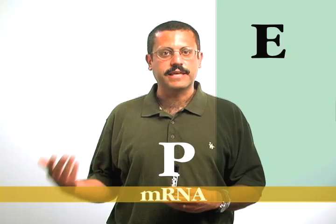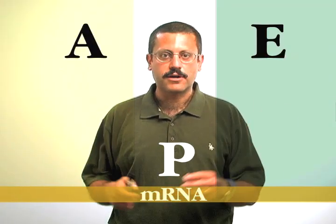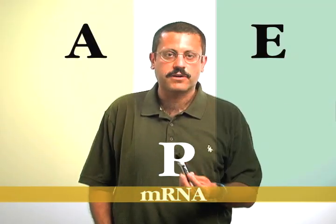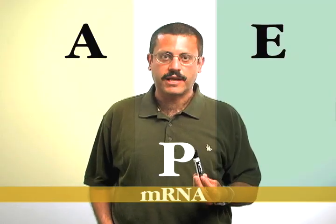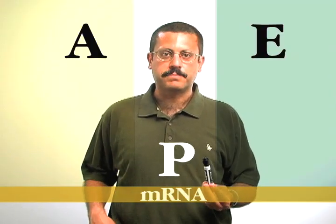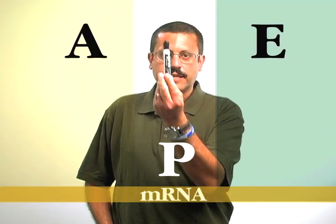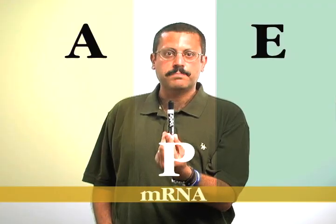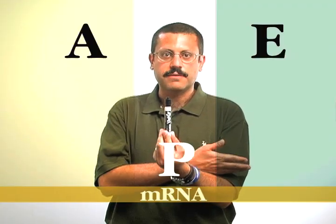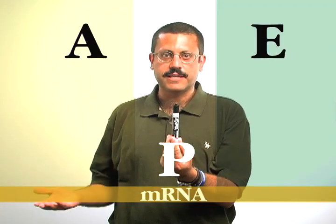To help illustrate this process, I'm going to utilize what I use in class, which are my magic markers right here. What you have to imagine is the E site is on my left, I'm standing in the P site, and the A site is on my right. These arms are the tRNAs, and these markers are the actual amino acids. The very first step that happens is the initiator tRNA lands into the P site. The E site is empty, the A site is empty.